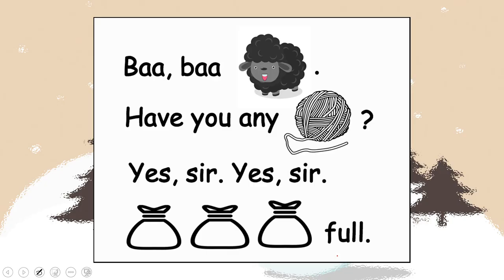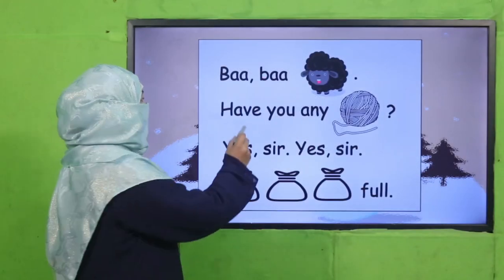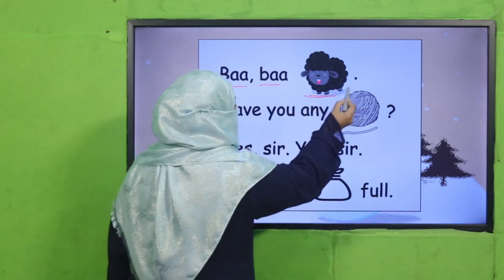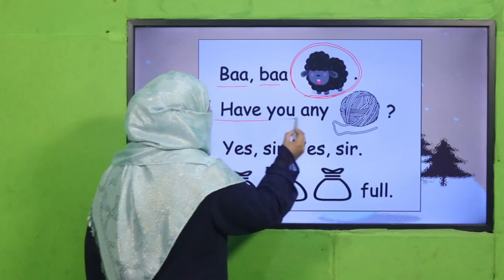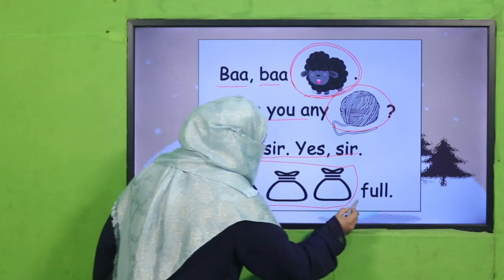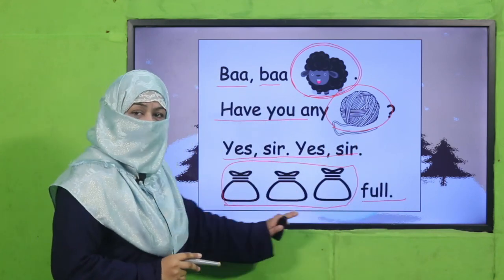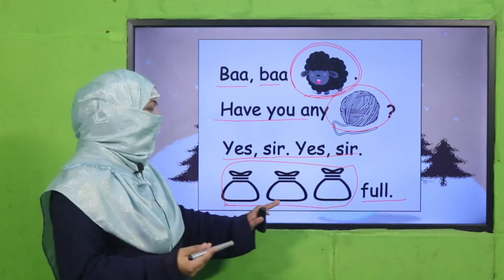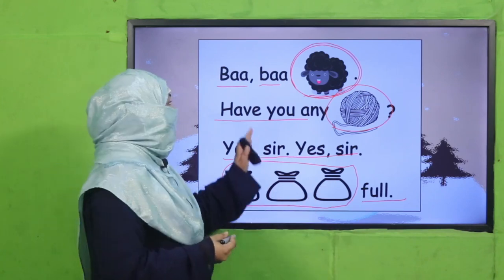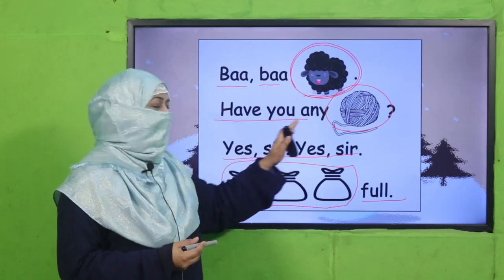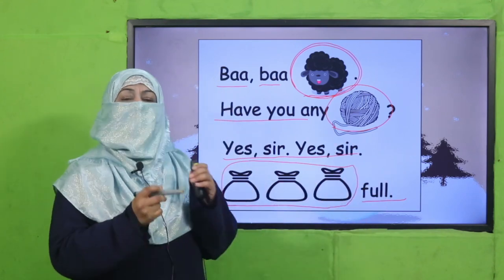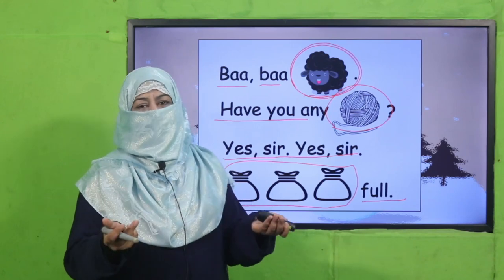Now let's see how we read a rebus story. Two words are written, and after that there is a picture — and still we can read it. For example: 'Baa Baa Black Sheep' — so this picture represents 'black sheep.' 'Have you any wool? Yes sir, yes sir, three bags full.' You see — we look at the picture, we say the word for it, and we read it. It's interesting! We keep looking at pictures, saying the words, and we complete the story.